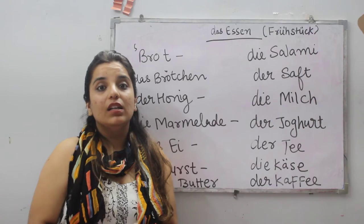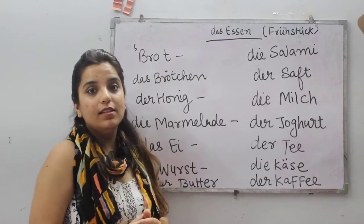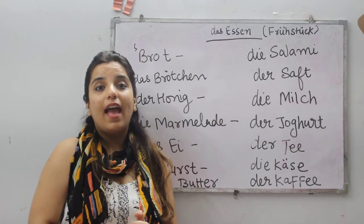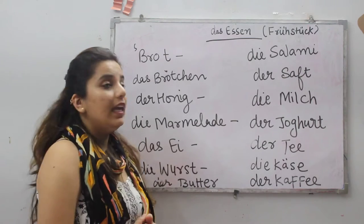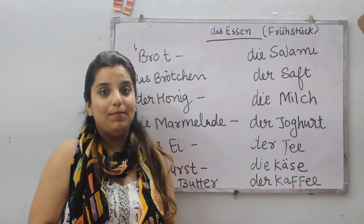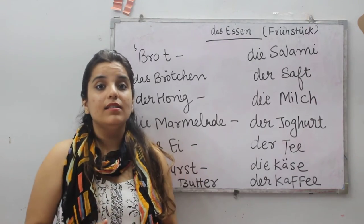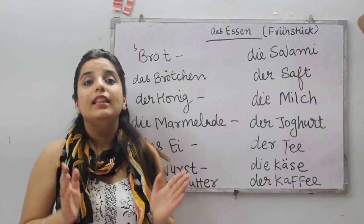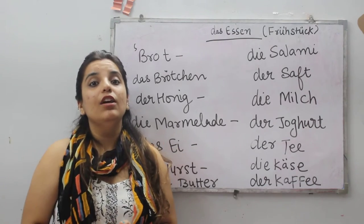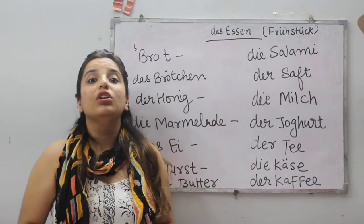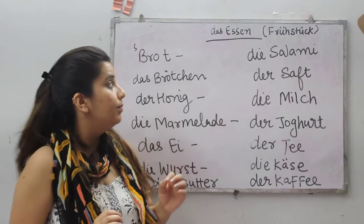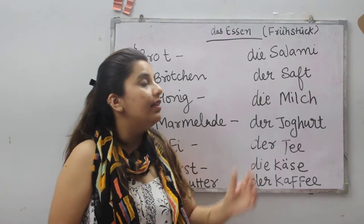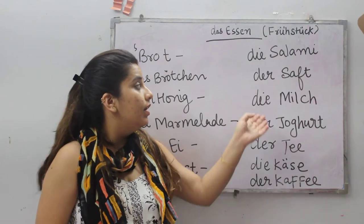Das Brot — Das Brot means bread. Das Brotchen — Das Brotchen means bun. Der Honisch — Der Honisch means honey. Die Marmalade — Die Marmalade means jam. Das Ei — Das Ei means egg. Die Wurst — Die Wurst means sausage. Der Booter — Der Booter means butter. Die Zalami — Die Zalami means salami. Der Zaft — Der Zaft means juice.